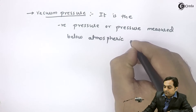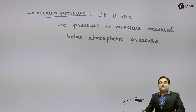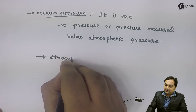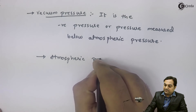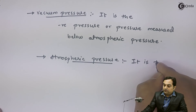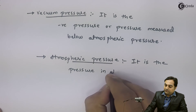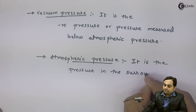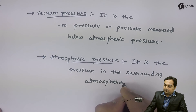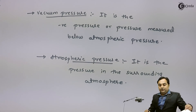At last we have atmospheric pressure. Atmospheric pressure is very simple — it is the pressure in the surrounding atmosphere, or we can say the pressure exerted by the air on the surroundings.